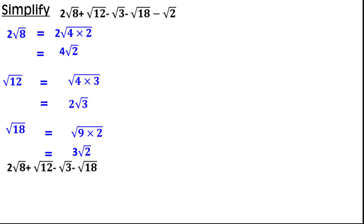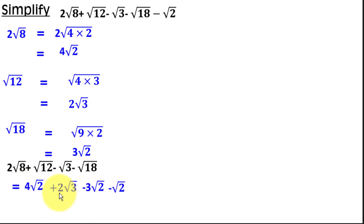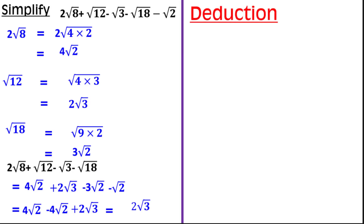Now rewriting the full expression with simplified terms, we collect like terms. We have root 2 terms: 4 root 2 plus root 2 minus 3 root 2 minus root 2, giving us 4 root 2 minus 4 root 2, which equals 0. We also have 2 root 3 minus root 3, giving 2 root 3. So the final answer is 0 plus 2 root 3, which equals 2 root 3.